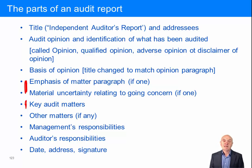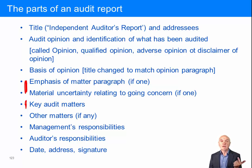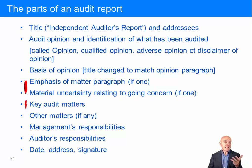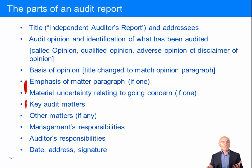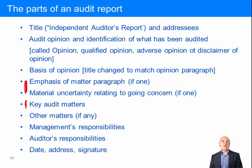The report then has two important paragraphs setting out management's responsibility and the auditor's responsibility. Management's responsibility covers preparing the financial statements, ensuring a system of good internal control, preventing and correcting fraud, and reviewing going concern. Then the auditor's responsibility paragraph says our responsibility is to audit the financial statements, and it will typically say that we do this on a test or sample basis, which allows us to draw reasonable conclusions that the financial statements are free of material misstatement.